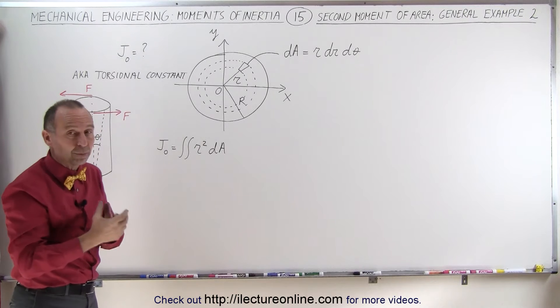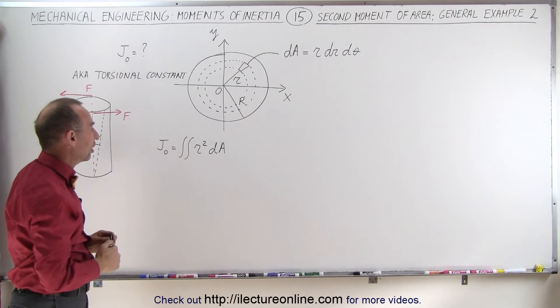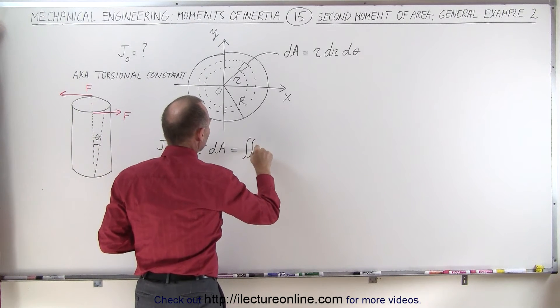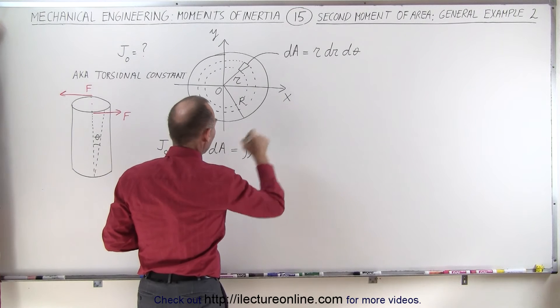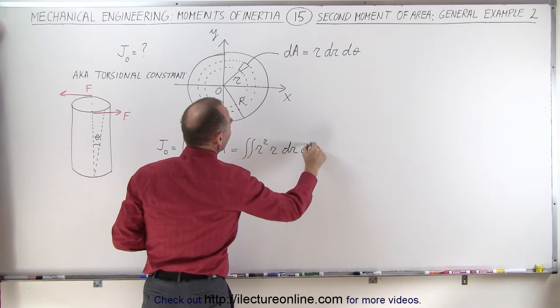Again, this is in general. We don't have specific dimensions. We'll get the same equation for any such shape. So this is going to be equal to the double integral of r squared times dA, which is r times dr times d theta.